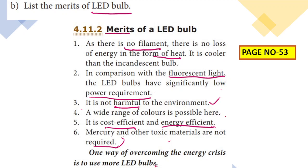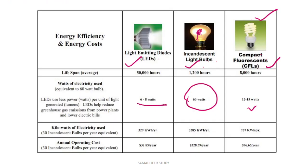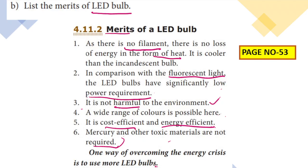A wide range of colors is possible with LED bulbs, whereas incandescent bulbs can only be seen in limited colors. LED bulbs can be seen in different colors. Lastly, LED bulbs are cost-efficient and energy-efficient. Less power consumption means lower cost. One way of overcoming the energy crisis is to use more LED bulbs.